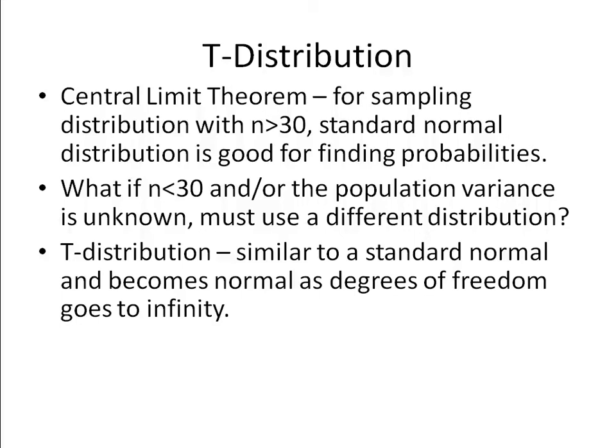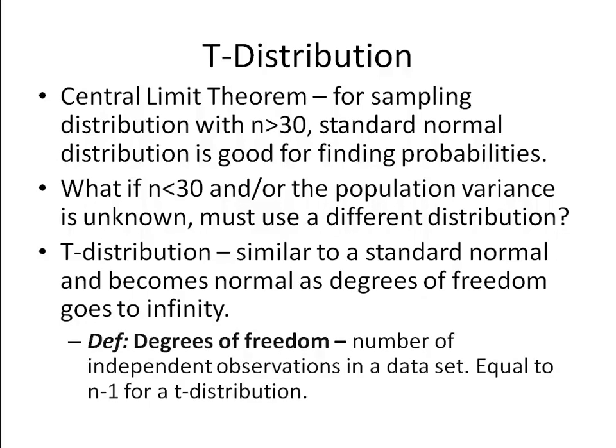This does introduce a topic called degrees of freedom, which I'll go over briefly, but we'll cover in more detail in subsequent lectures. But basically, degrees of freedom are the number of independent observations in a data set. So for a t-distribution, it's always n minus 1, or the sample number minus 1.